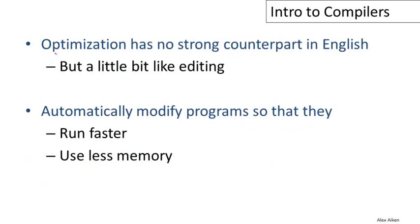The compiler phase optimization doesn't have a very strong counterpart in everyday English usage, but it's a little bit like editing. In fact, it's a lot like what professional editors do when they have to reduce the length of an article to get it down to some word budget. For example, I have this phrase right here: but a little bit like editing. If I didn't like it, if I thought it was too long, I could replace the middle four words with two words: akin to. So now it says but akin to editing. That means exactly the same thing as the original phrase, but uses fewer words.